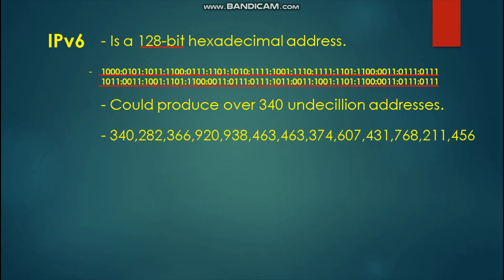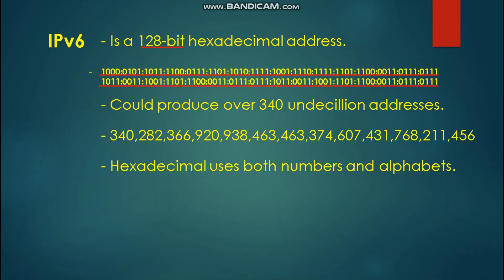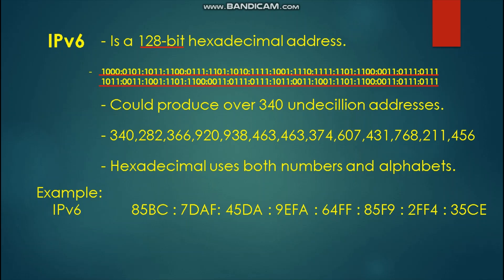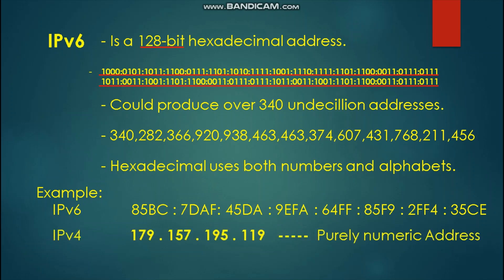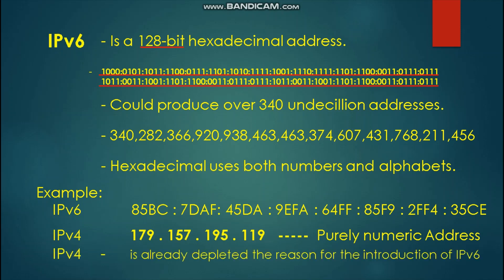This is the number representation of undecillion. IPv6 is a hexadecimal number that uses both numbers and alphabets. This is an example of an IPv6 address that has a combination of numbers and letters, while IPv4 has a purely numeric address. IPv4 has already depleted, which is the reason for the introduction of IPv6.